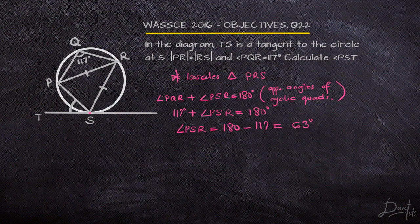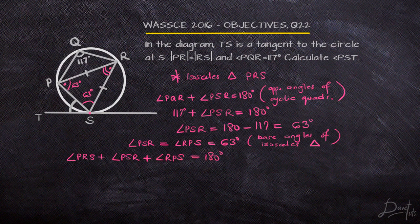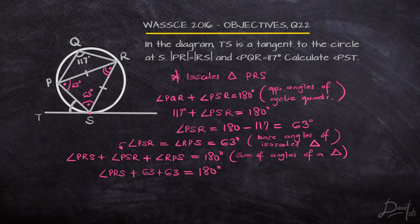Since we know PSR is 63 degrees, the other base angle of the isosceles triangle is also going to be 63 degrees, because base angles of an isosceles triangle are always equal. We can see how understanding the principles of circle geometry and triangle properties helps us solve these questions. Moving on, we know we can find angle PRS because the sum of angles in a triangle adds up to 180 degrees. We have already found both base angles as 63 degrees each, so we solve by subtracting 63 twice from 180 degrees.